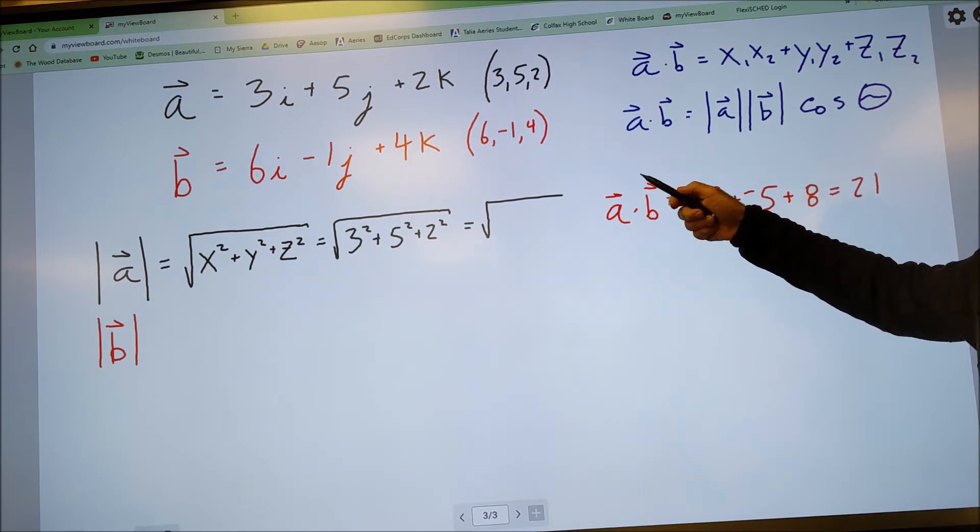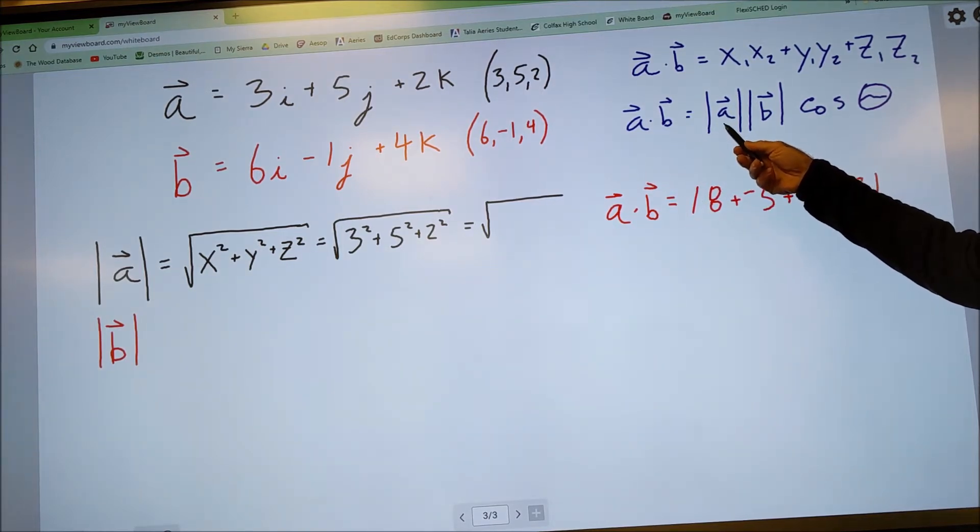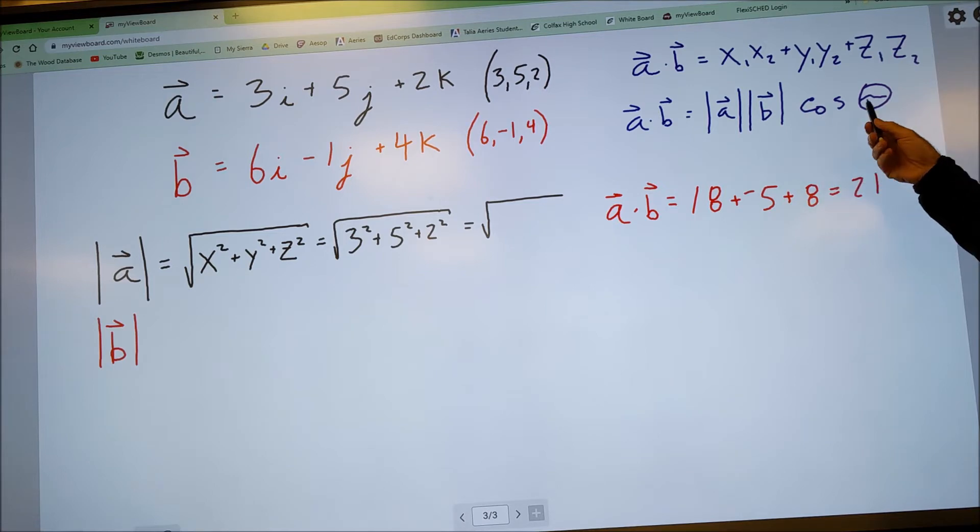And then there's a second equation for dot product. A dot B is equal to the magnitude of A, that's what those absolute values mean, times the magnitude of B, cosine of the angle between them.